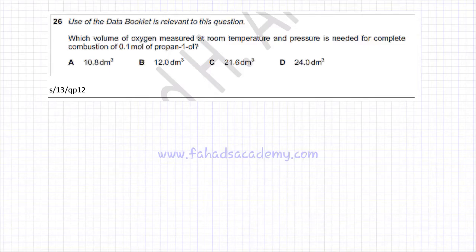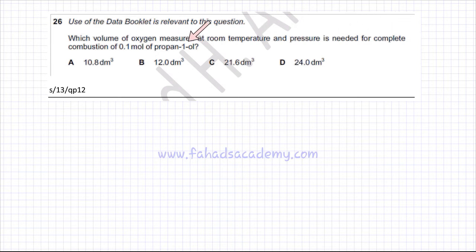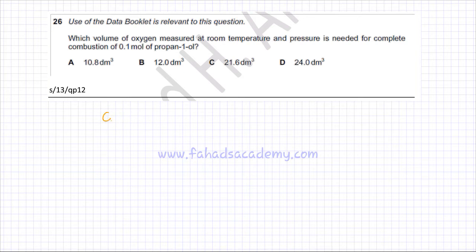The following question is about combustion of propane-1-ol. The question asks: which volume of oxygen, measured at room temperature and pressure, is needed for complete combustion of 0.1 mol of propane-1-ol? So we need a balanced equation — that's the first thing we need. Propane-1-ol is C3H7-OH, with three carbon atoms.